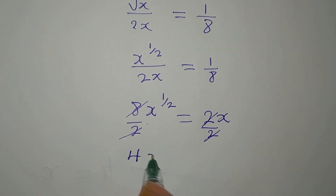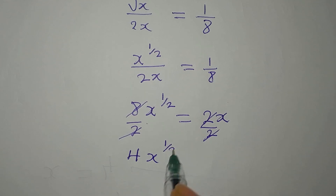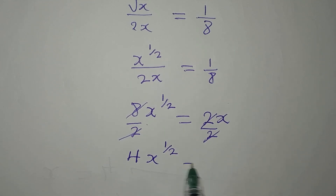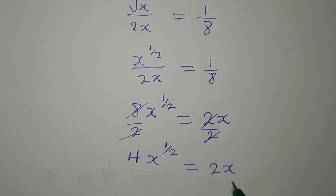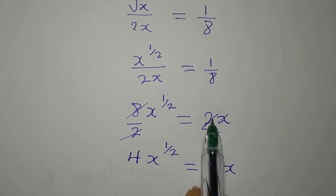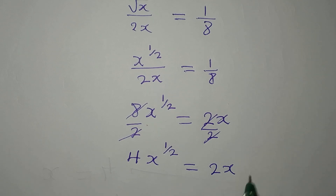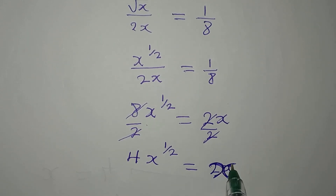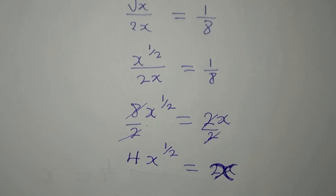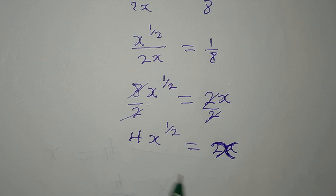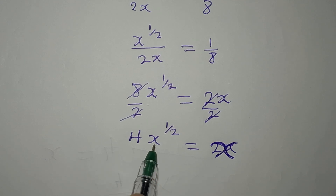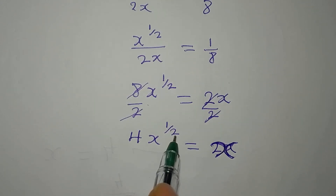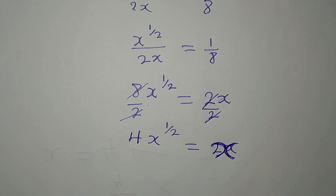After dividing, we have 4x to the power of 1 over 2 equals x. The 2 has cancelled, so we just have x on the right. But we still have x to the power of 1 over 2 on the left, so we are going to square both sides.